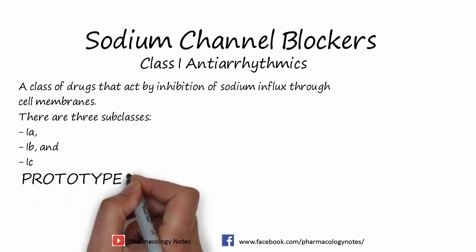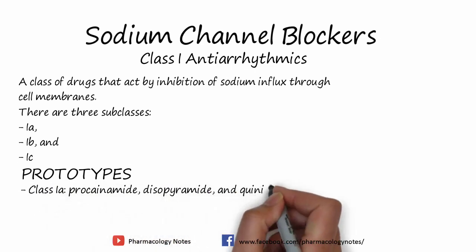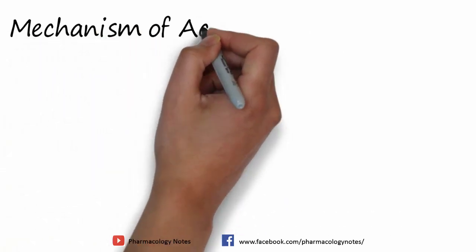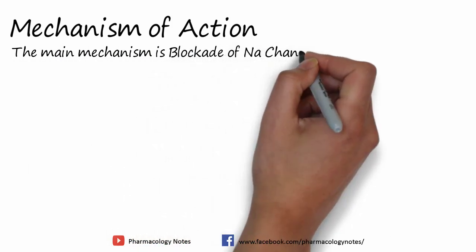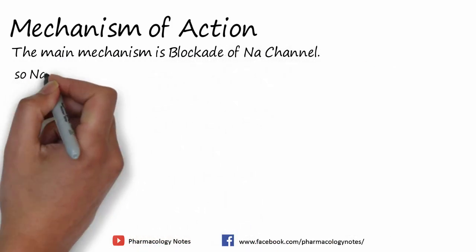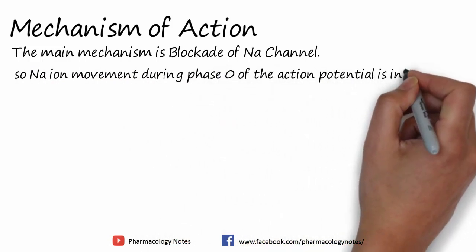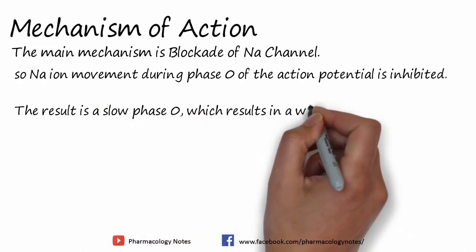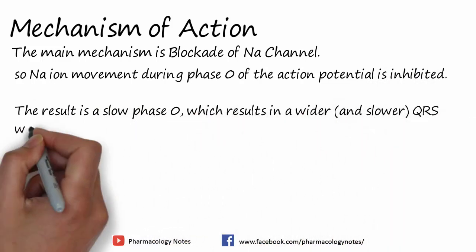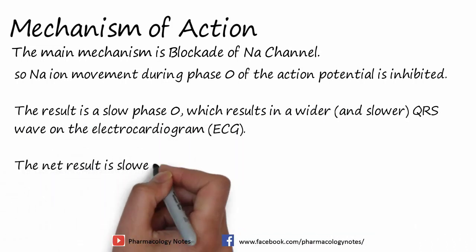Here are examples of the prototypes of the sodium channel blockers — which drugs belong to class 1A, 1B, and 1C. The main mechanism is blockade of the sodium channel. Sodium ion movement during phase 0 of the action potential is inhibited. The result is a slow phase 0, which results in a wider and slower QRS wave on the electrocardiogram. The ultimate net result is slower conduction.